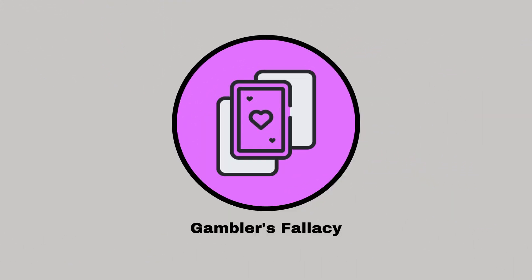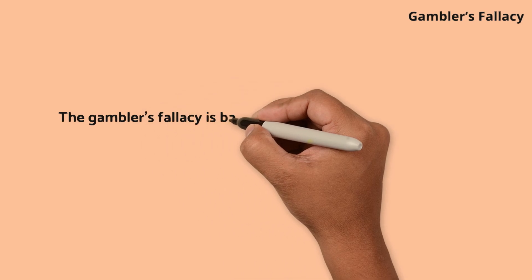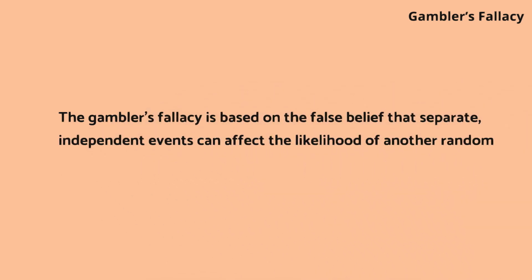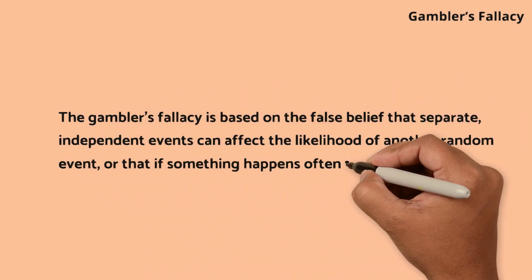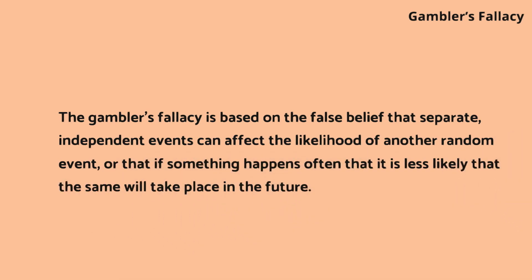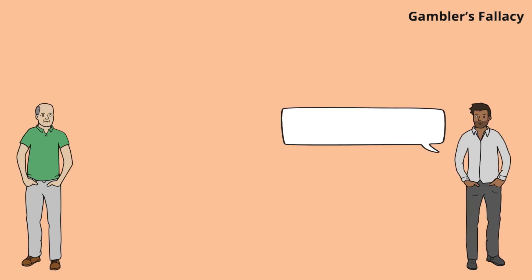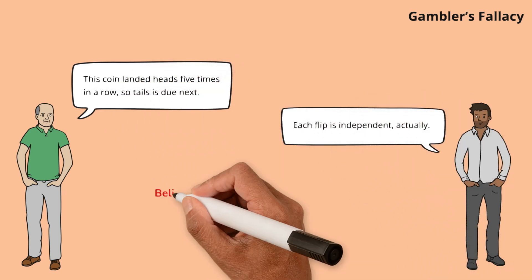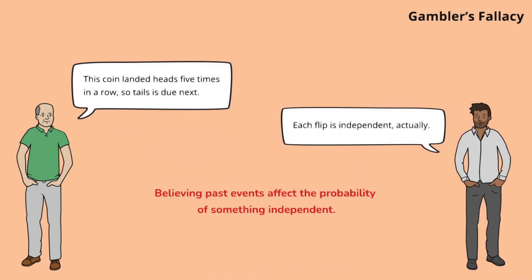Gambler's fallacy. The gambler's fallacy is based on the false belief that separate, independent events can affect the likelihood of another random event, or that if something happens often, it is less likely that the same will take place in the future. Jack expects a change in luck based on past events, showing a misunderstanding of independence in probabilities. David corrects this misconception, promoting rational decision-making.